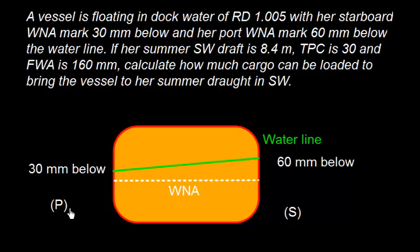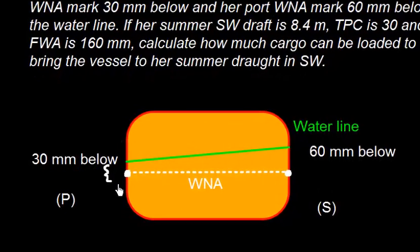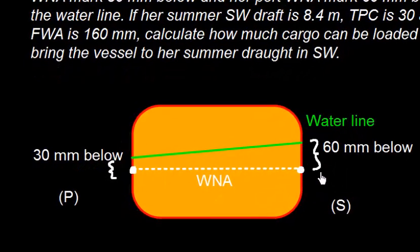Here we have taken the vessel in an upward ship direction showing port and starboard sides. This is the port side and this is the starboard side — the waterline is marked here. On the port side this is the WNA mark, and on the starboard side this is also the WNA mark. The port WNA is 30mm below the waterline and the starboard WNA is 60mm below the waterline.